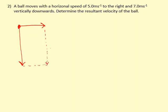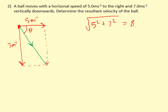The resultant is in this direction towards the bottom right. We need to find this angle and the size of that vector, because velocity is a vector. We have 5 meters per second this way and 7 meters per second that way. Using Pythagorean theorem: 5 squared plus 7 squared gives us 8.6 meters per second.